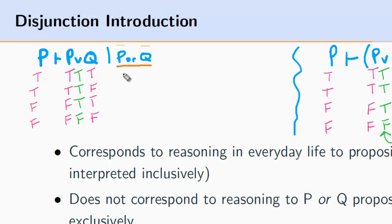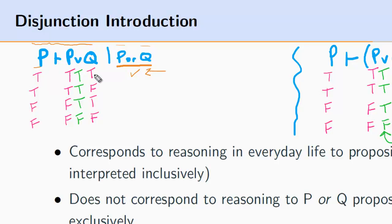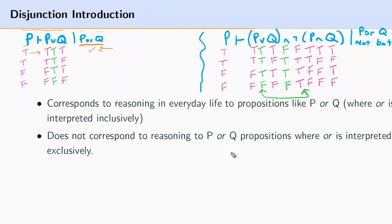P is the case, Q is the case, as well as when both propositions are the case. So if it's true that you can have ice cream and cake — which corresponds to the row where P is true and Q is true — then the entire formula is true. You'll notice that disjunction introduction, as we've formulated it, says that if P is the case, then we can reason to P or Q and we're not moving from truth to falsity.